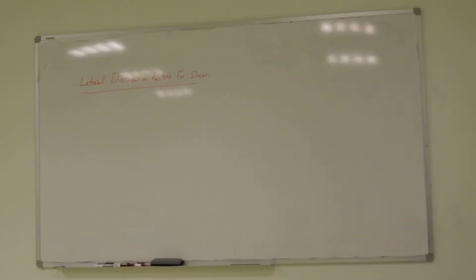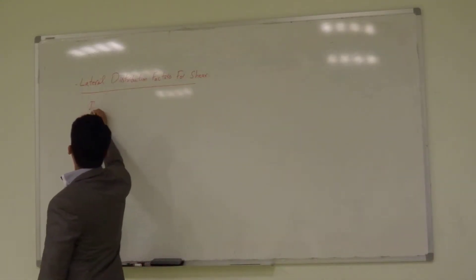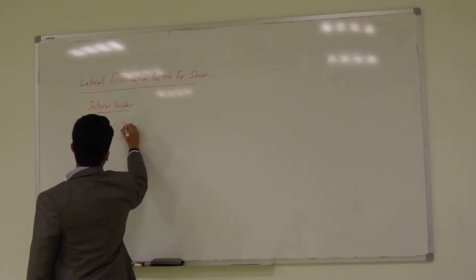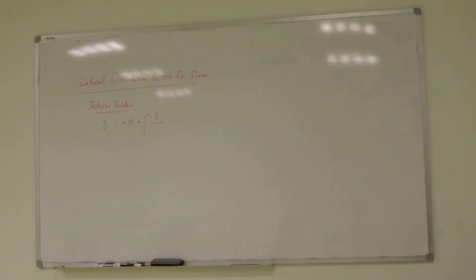For example, for one design lane loaded, the value of G is equal to, let's talk about for interior girder. For interior bridge girder, G for shear is equal to 0.36 plus S over, I gave you the equations. Please check that whether this equation is correct or not. I have the equations. Yeah, S over 7.6.